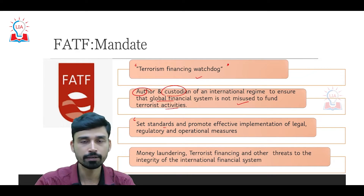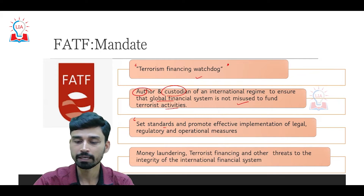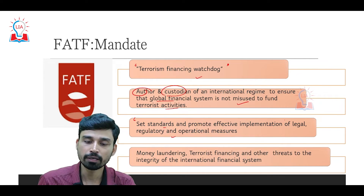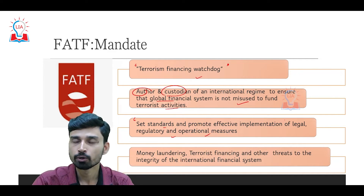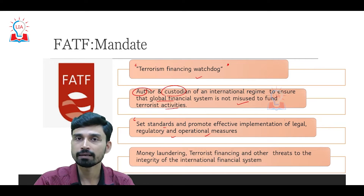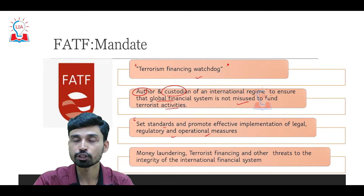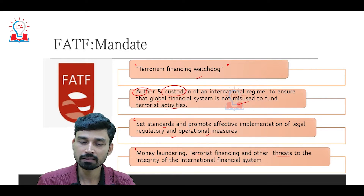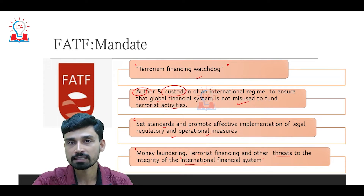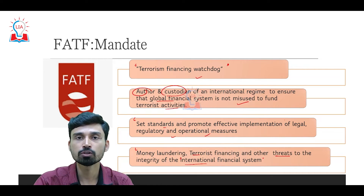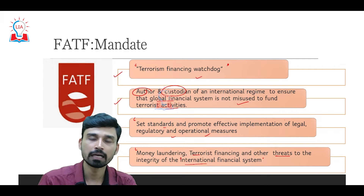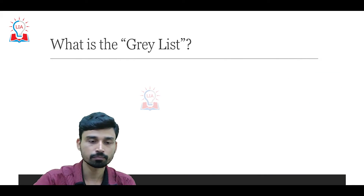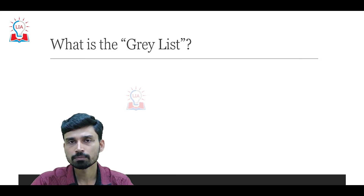The third major task that FATF carries out is that it sets standards and promotes the effective implementation of legal, regulatory, and operational measures to tackle money laundering, terrorism financing, and the proliferation of WMD. So money laundering, terrorist financing, and other threats to the integrity of the international financial system are broadly what FATF addresses.